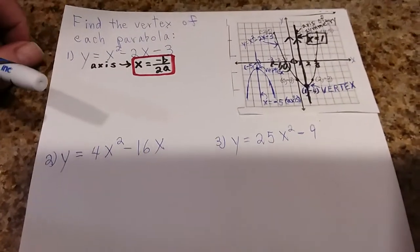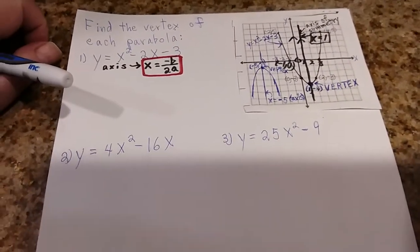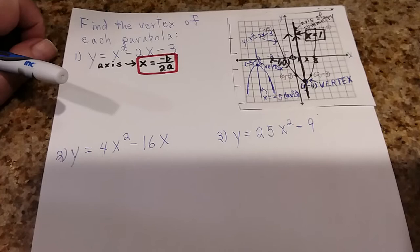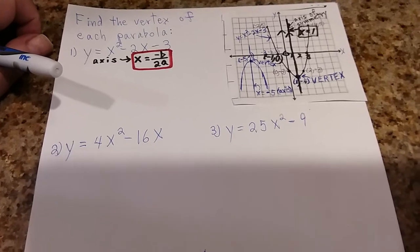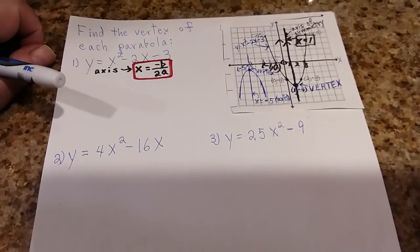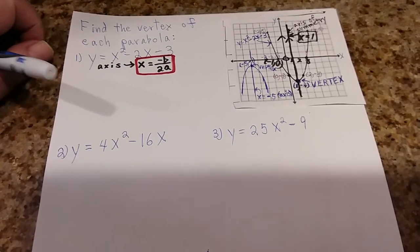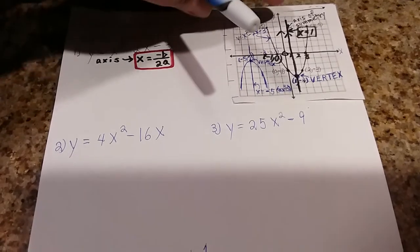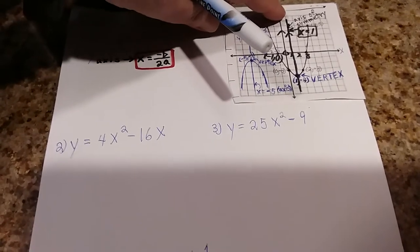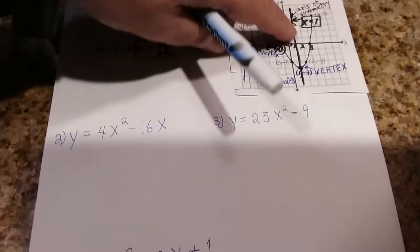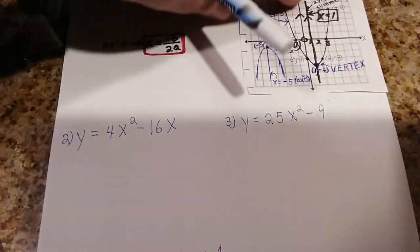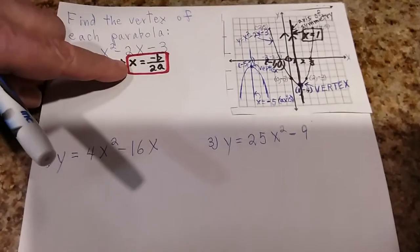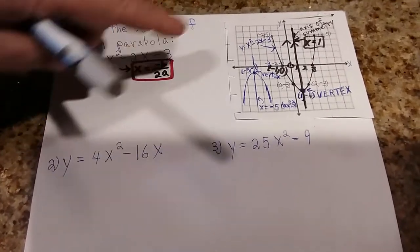Hi again students, it's me Mr. Baker back again. This is part two of a parabola lesson. If you recall, last time we were looking at this diagram and I showed you how to find the equation of the axis of symmetry using the formula, which I put again right here.